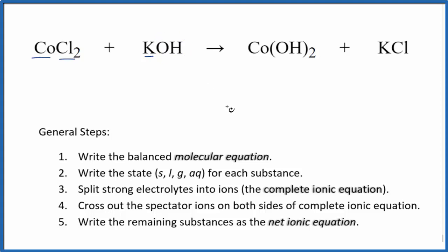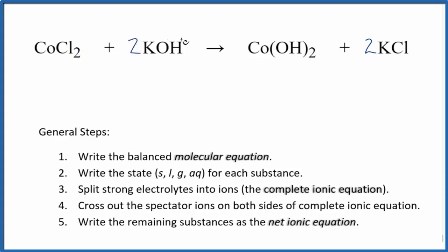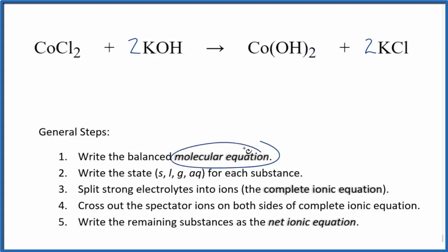The first thing we need to do is balance the molecular equation. We have two chlorines here, just one here, so let's put a 2 in front of the KCl. That gives us two potassium, so we'll put a 2 here. We have two hydroxides, and we have these two hydroxide ions here. So this is the balanced molecular equation.